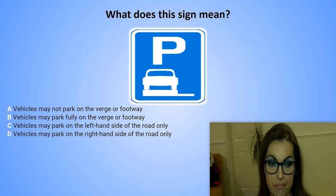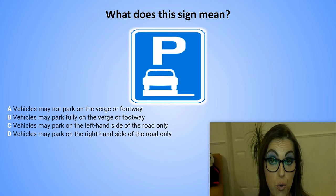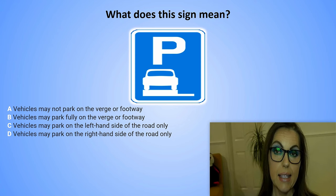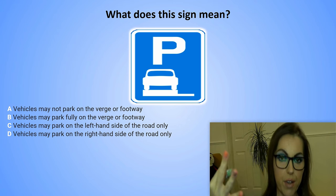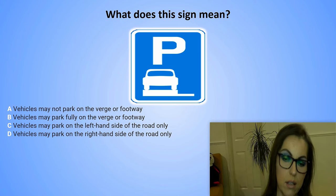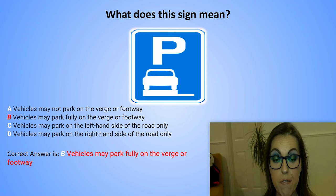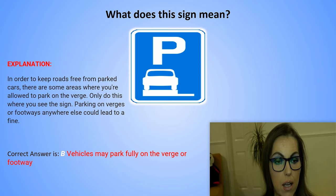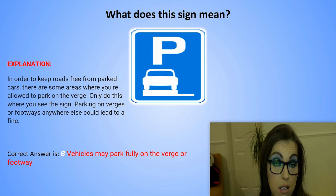What does this sign mean? A. Vehicles may not park on the verge or footway. B. Vehicles may park fully on the verge or footway. C. Vehicles may park on the left-hand side of the road only. D. Vehicles may park on the right-hand side of the road only. The correct answer is B. Vehicles may park fully on the verge or footway. Explanation: In order to keep roads free from parked cars, there are some areas where you are allowed to park on the verge. Only do this where you see the sign. Parking on verges or footways anywhere else could lead to a fine.